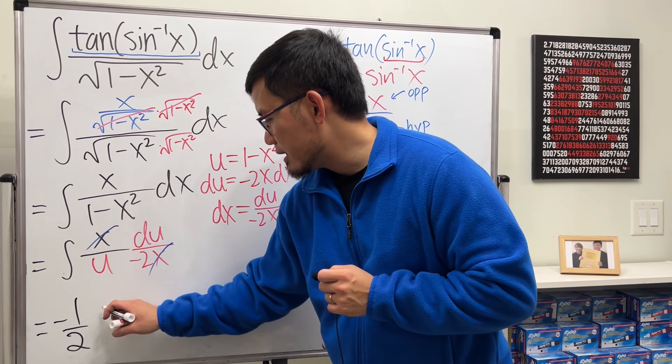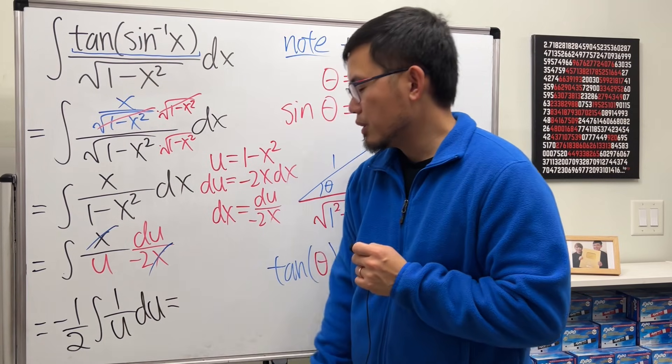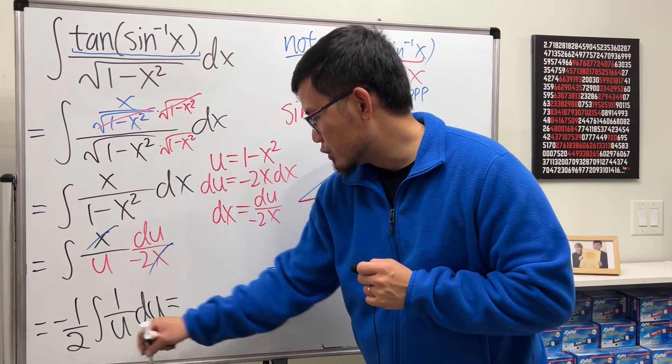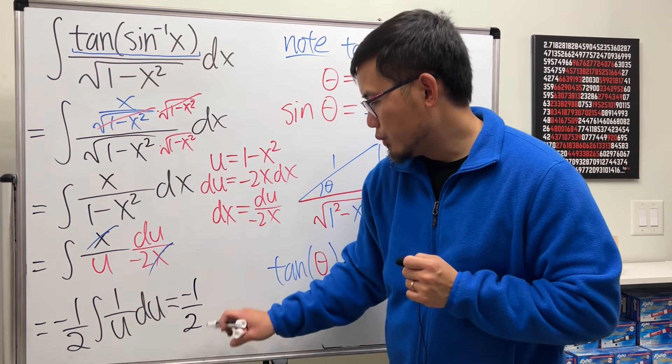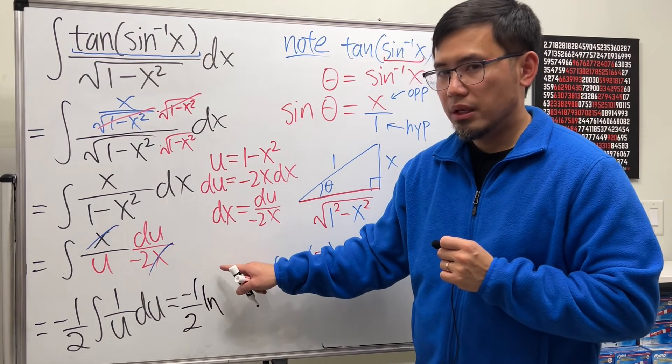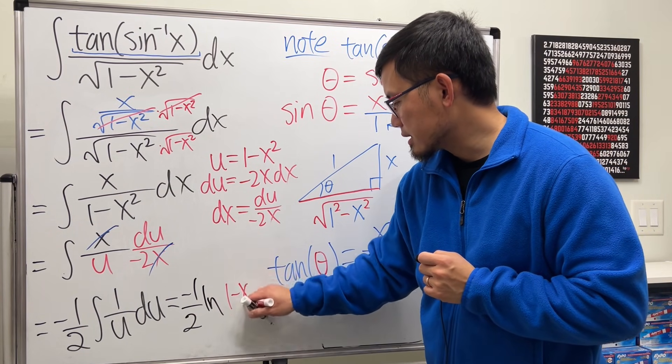We have a 1 over negative 2, let's put it outside. And then look at the integral of 1 over u in the u world. Well, integrating that, let's just put down negative 1 over 2. Integrating 1 over u, we get ln, and then u, right? u is what? That 1 minus x squared.